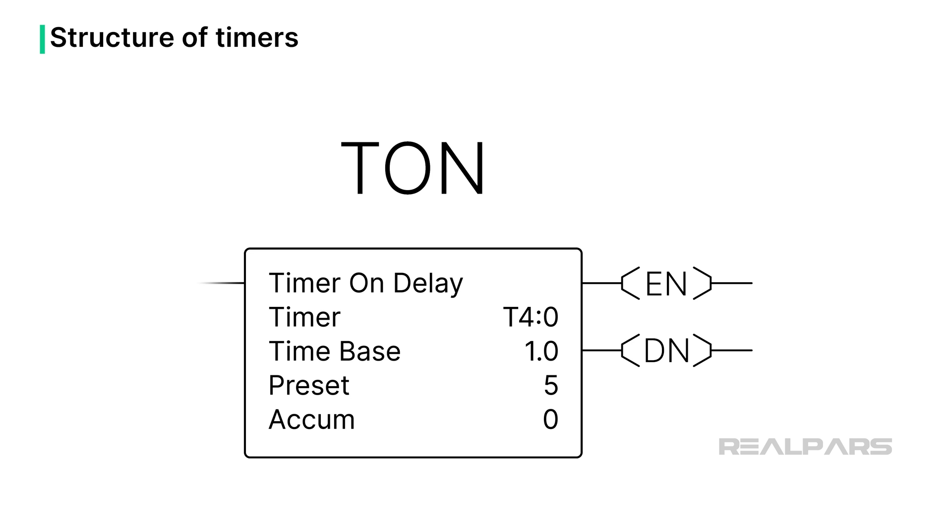I just need to provide the correct timer type, add the correct values to support my application, and then let the timer do its thing. When the accumulated time reaches the preset, the time is done, and the DN bit is set.